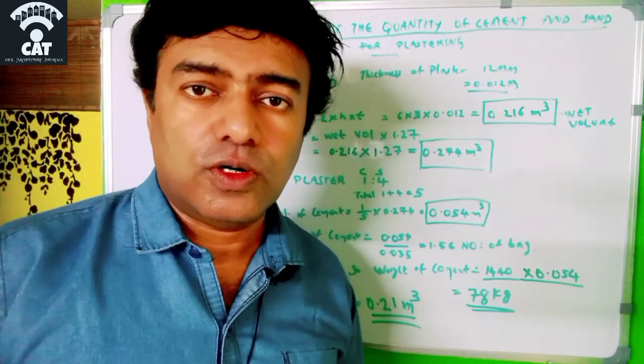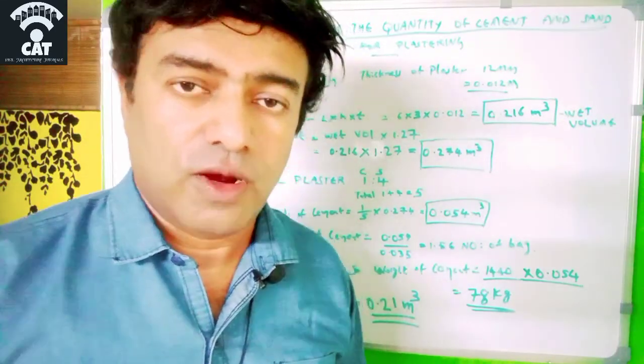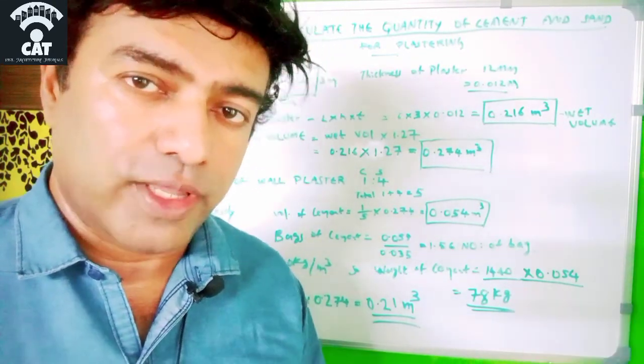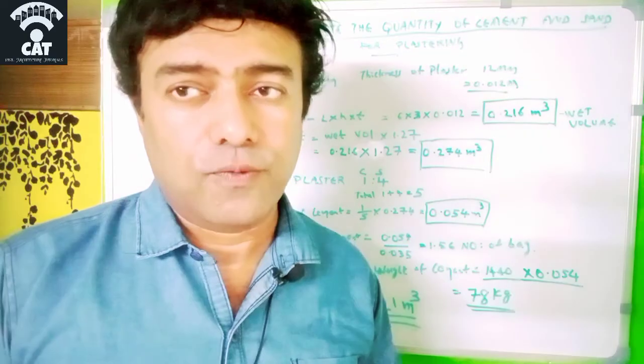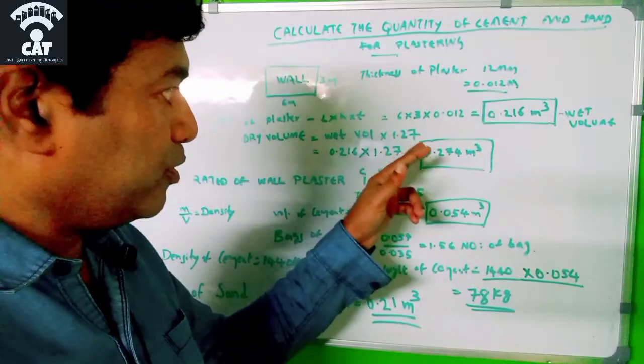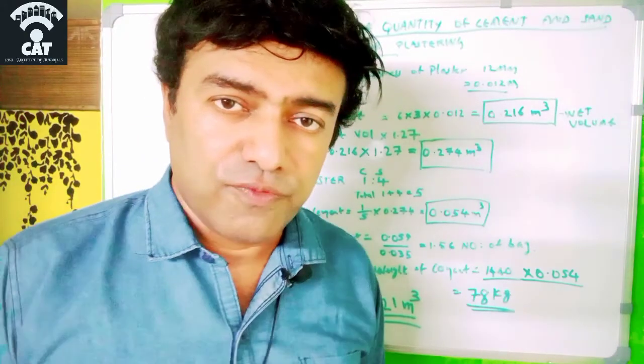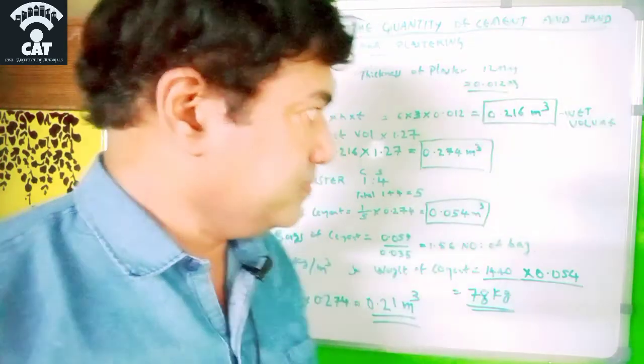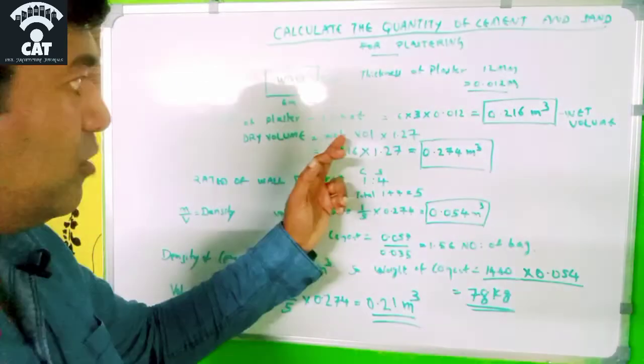So we got the volume of the wall plaster, but that is the wet volume. We need to know the dry volume. There is a constant called 1.27. We have to multiply the wet volume with 1.27 to convert it into dry volume.